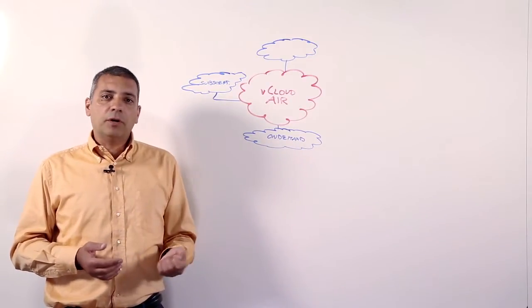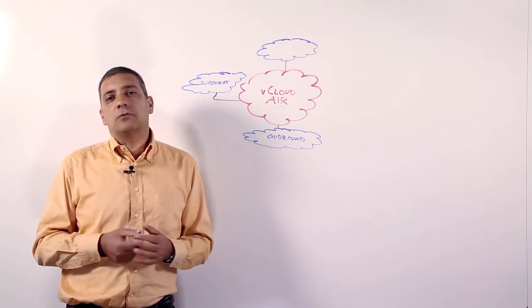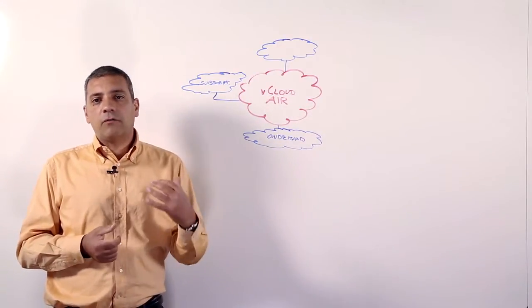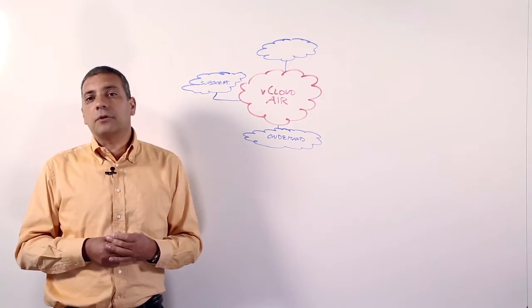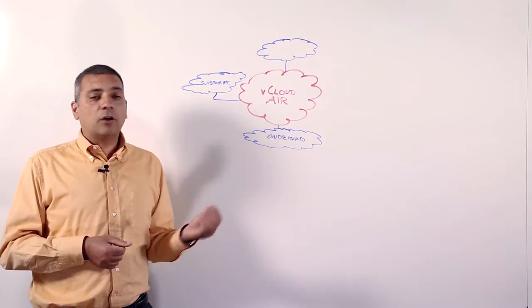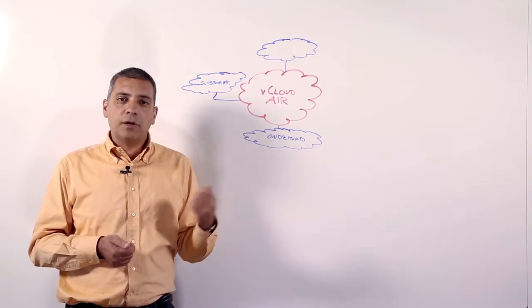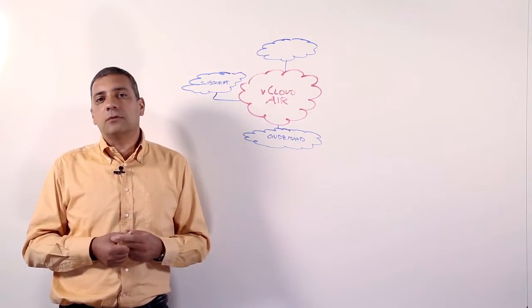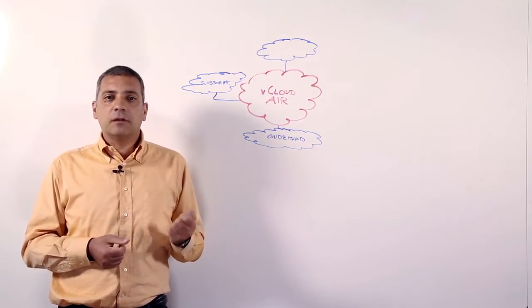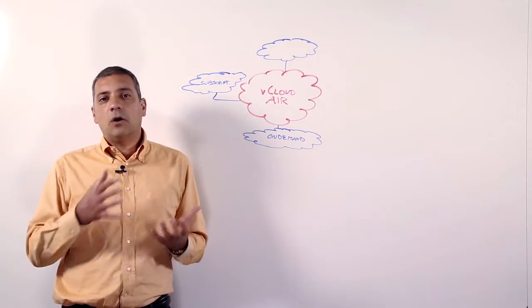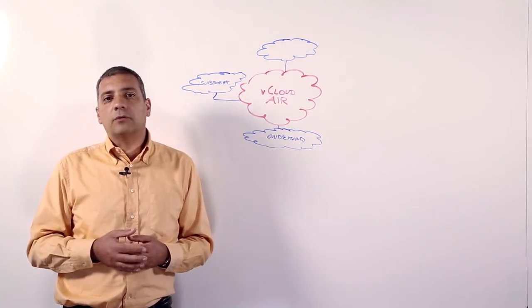Now let's dig more into how a customer can actually consume those resources off of those vCloud Director instances. So the atomic unit of consumption of the compute service is what we refer to as the virtual data center. The virtual data center is a construct that lives on top of a vCloud Director instance.